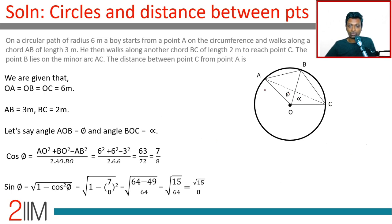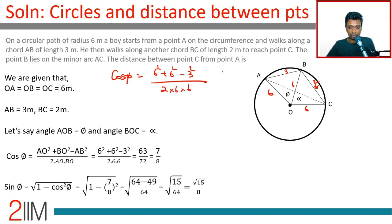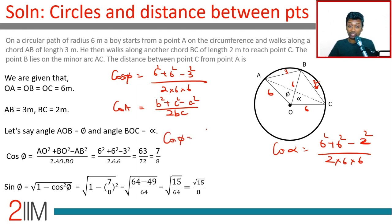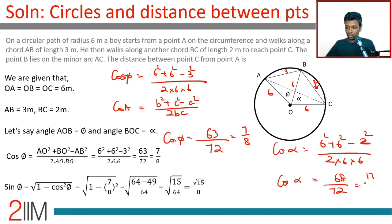Let's call angle AOB as phi and angle BOC as alpha. The sides are 6, 6, 3 for triangle AOB and 6, 6, 2 for triangle BOC. Cos phi = (6² + 6² − 3²) / (2×6×6) = 63/72 = 7/8. Cos alpha = (6² + 6² − 2²) / (2×6×6) = 68/72 = 17/18.